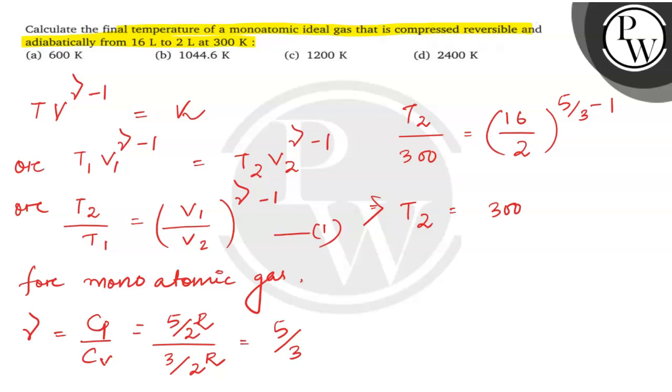T2 is equal to 300 into 8 to the power 2 upon 3. We can write it as 300 into 2 to the power 3 to the power 2 upon 3.